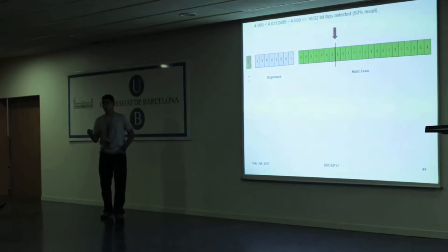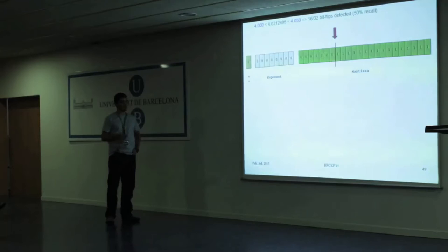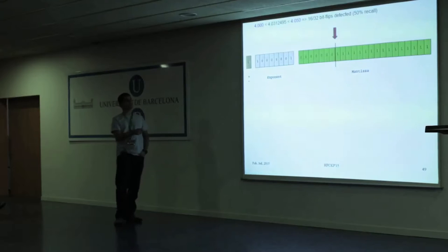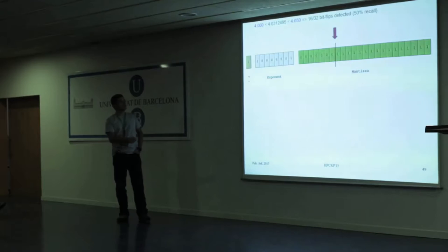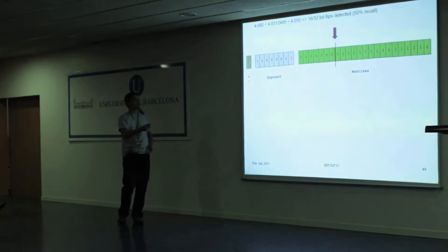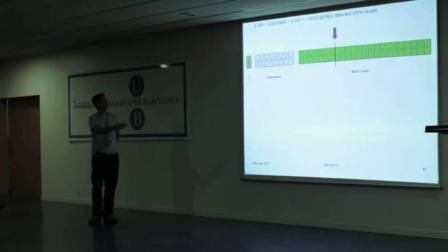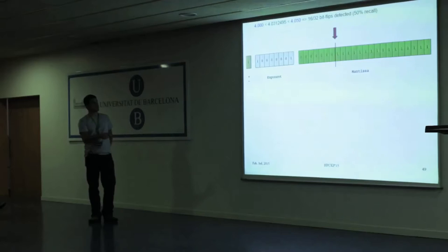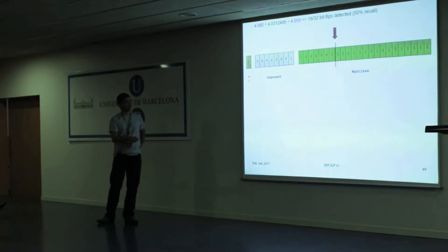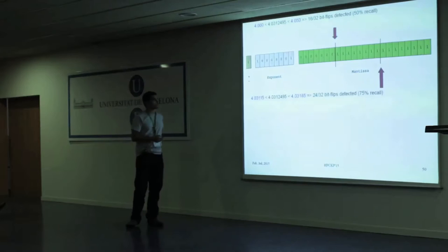For instance, if you have a distribution that tells you the value for a particular grid point should be between 4.0 and 4.050, then any corruption occurring in the high bits will produce a different value out of this interval. So if you have a predictor using this distribution that gives you such an interval, you would be able to detect any corruption in the first 16 bits out of a 32-bit floating point representation - basically 50% of all bits.